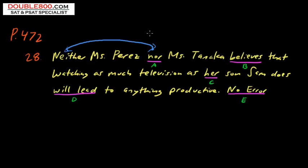We've talked about this in previous lessons. The only conjunction that you can possibly connect two singular subjects to make them plural is and. If it's not an and, it is always singular. Neither one, neither Ms. Perez nor Ms. Tanaka, neither one believes is correct. It's singular. There's no and.